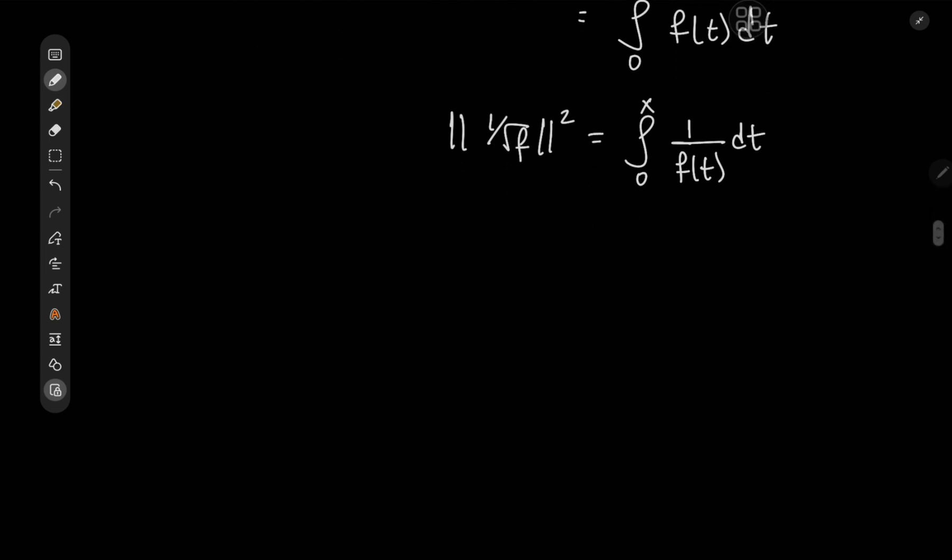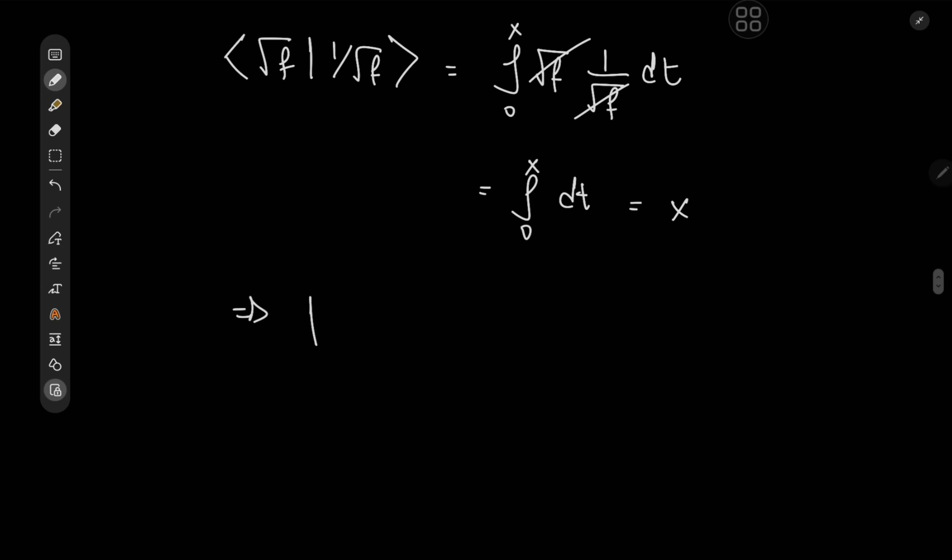But how exactly does this help with our integral equation? Well, now consider the inner product of root f and 1 over root f. This thing would yield the integral from 0 to x of root f times 1 over root f dt. Obviously, we have cancellation, and we have the integral from 0 to x of dt, which yields x. And this implies that the absolute value of the inner product of root f and 1 over root f squared equals x squared.